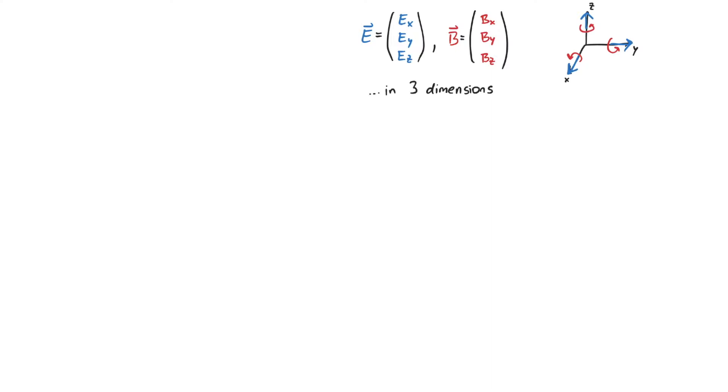So from this we would assume that for a different number of dimensions, let's say D spatial dimensions, there would also be D electric fields and D magnetic fields. However, this naive conclusion is wrong.